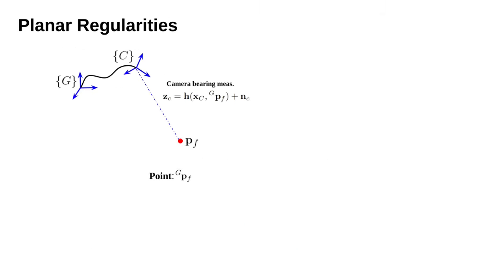Now let's introduce the planar regularities. As the robot moves in the environment and views a point feature PF in G, it can be related to the robot navigation state Xc and the feature with the nonlinear camera bearing measurement function. If there are multiple points on a plane, we are able to detect and track plane pi and introduce the plane state. We adopt the closest point representation for the plane.